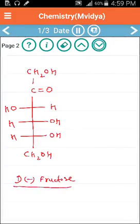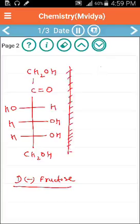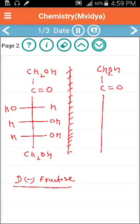Now this is the structure of D-minus fructose. We need to draw mirror image of this D-minus fructose. So this is the mirror. Now the above CH2OH, CO group are same in both the cases, and this is CH2OH, this is also same.